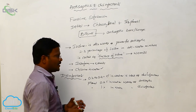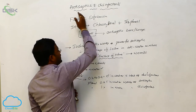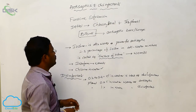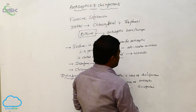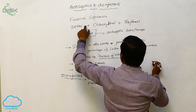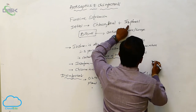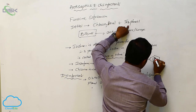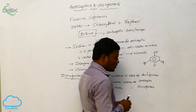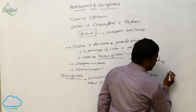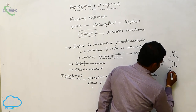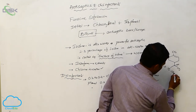Sulfur dioxide in less concentrations is used as an antiseptic, whereas at a little more concentration, it works as a disinfectant. Now let us have the structures. The most important chemical substances present in Dettol — the best antiseptic available in the market — are chloroxylene and terpineol. The structure of chloroxylene has OH, Cl, CH3, and CH3 groups. The structure of terpineol is CH3, CH3, CH3, OH.